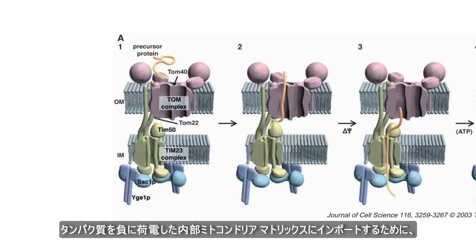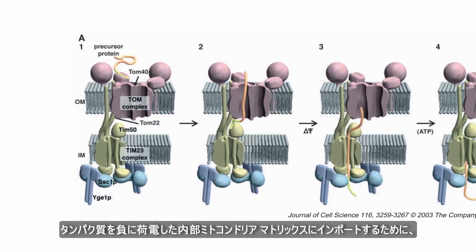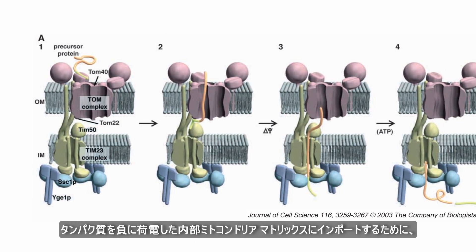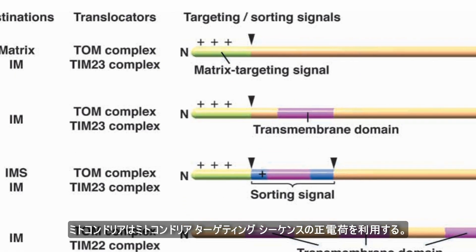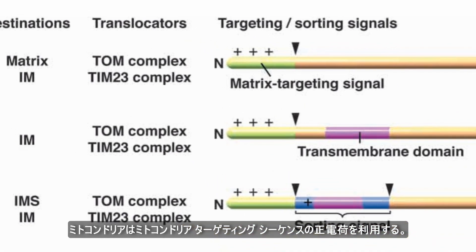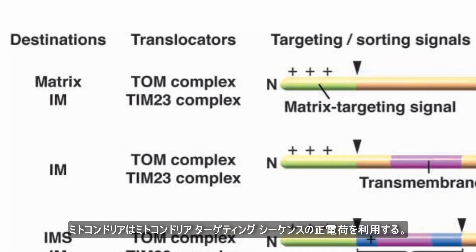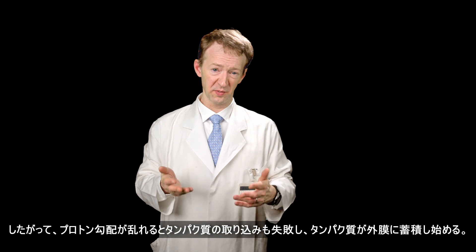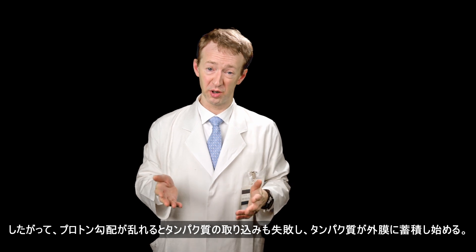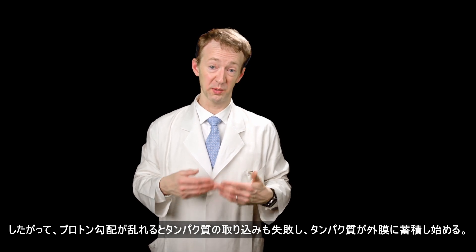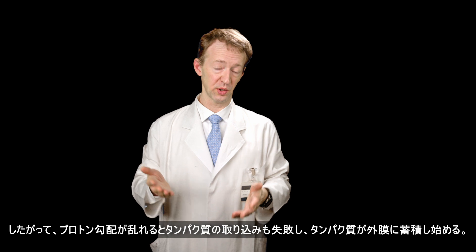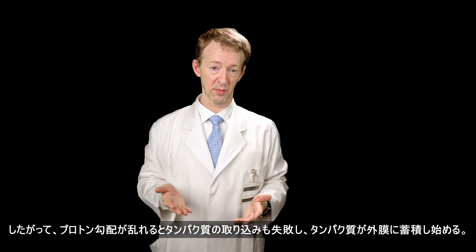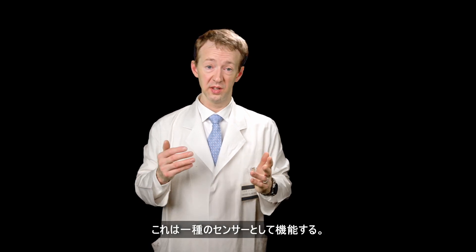In order to import proteins into the negatively charged inner mitochondrial membrane, mitochondria take advantage of the positive charge on the mitochondrial targeting sequence. Therefore, protein import also fails when the proton gradient is disrupted, and proteins begin to accumulate on the outer membrane. This accumulation can serve as a form of sensor.